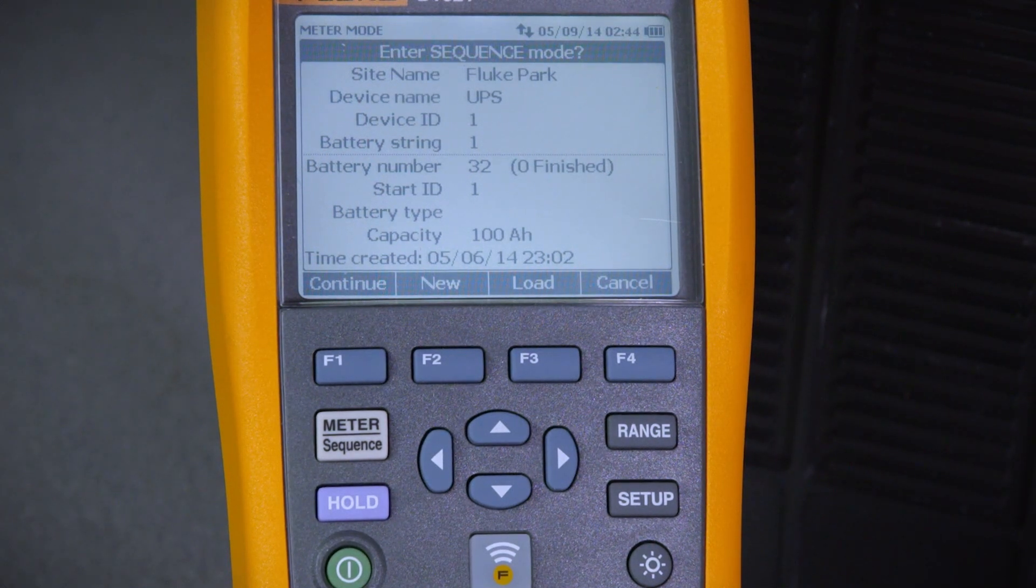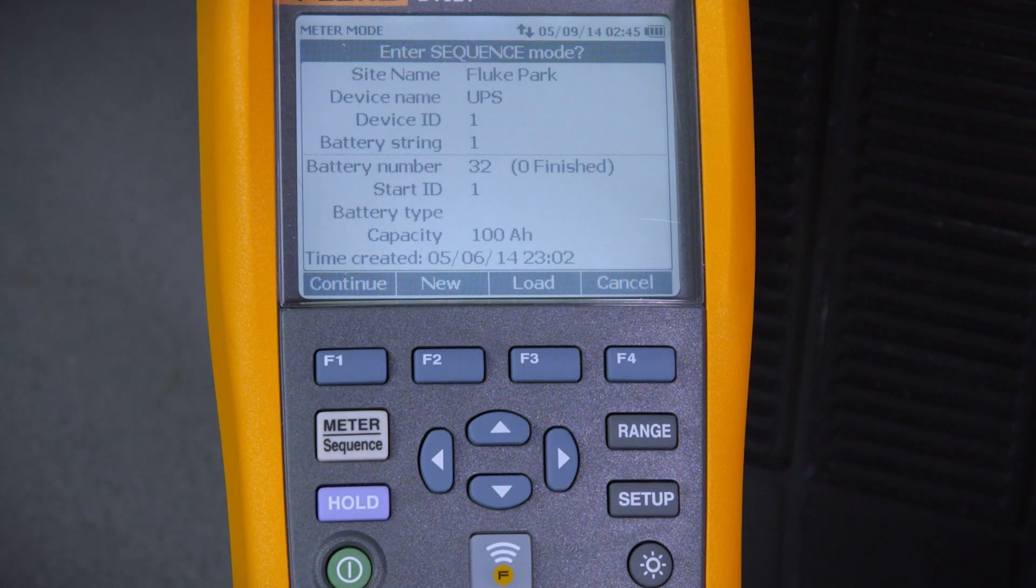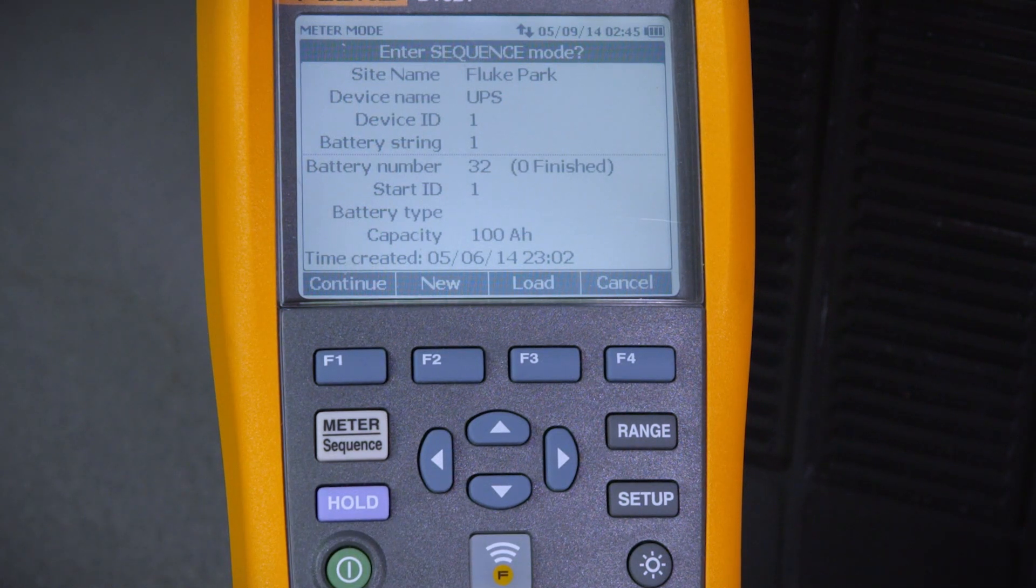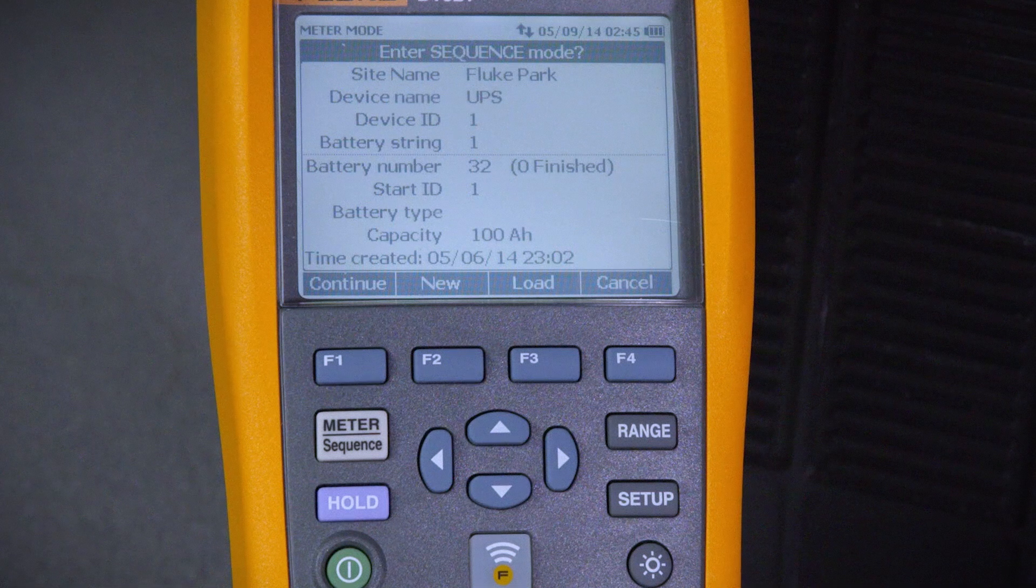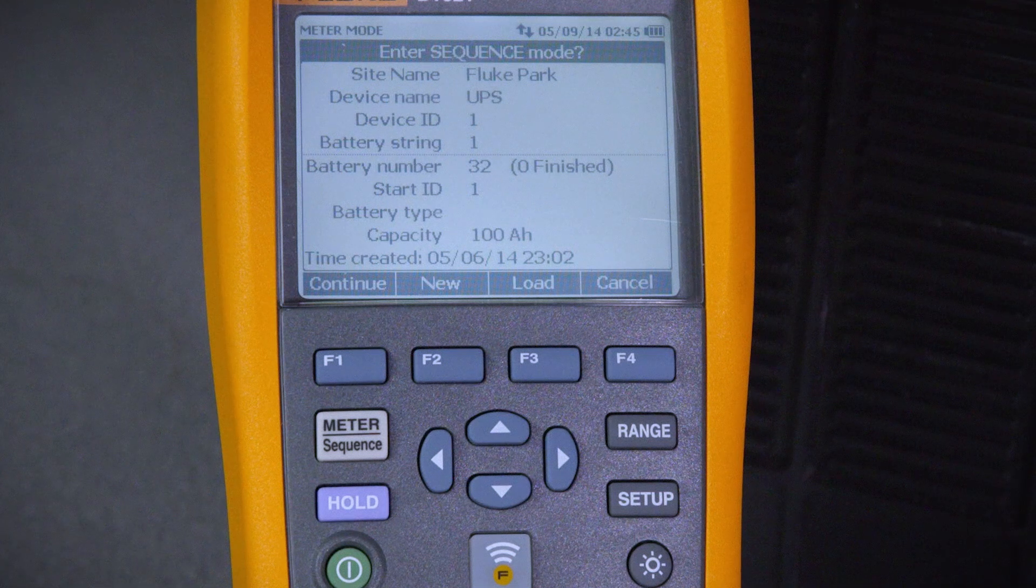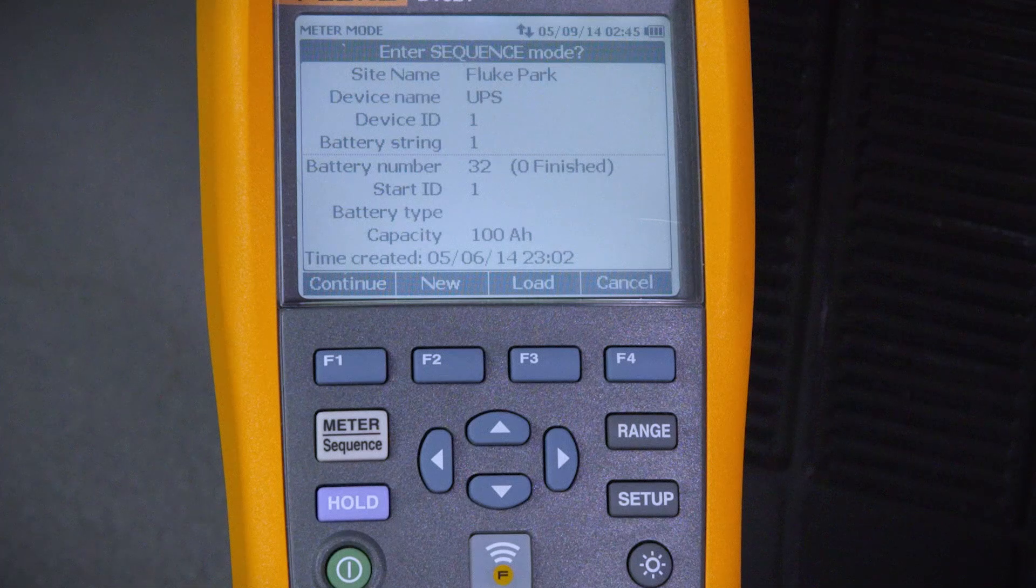Sequence mode allows you to take and store multiple measurements simultaneously. We've created a sequence name for this site, which is Fluke Park. Our device name is UPS. For the purpose of this demonstration, we'll assume we have 32 batteries in this string supplying power to the UPS.